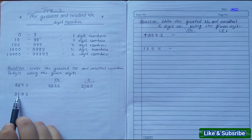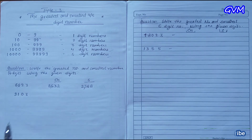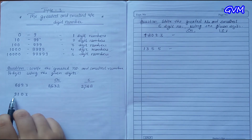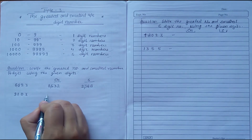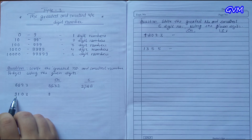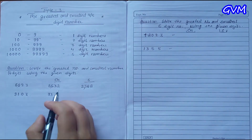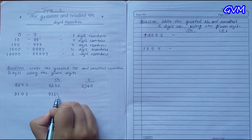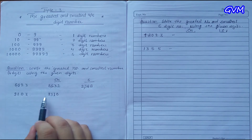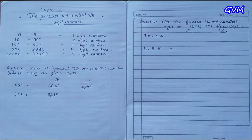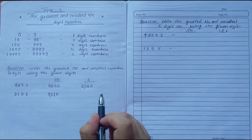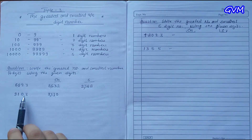Similarly, we have the digits 9, 1, 0, and 3, and we have to generate the greatest and smallest number. For the greatest number, arrange them in descending order. Write 9 first because it is the greatest, then 3, then 1, and lastly 0. Put a comma, and we have 9,310 as the greatest number.